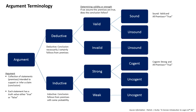An inductive argument, on the other hand, asserts that the truth of the conclusion is supported to some degree of probability by the premises. For example, given that the U.S. military budget is the largest in the world (premise = true), then it is probable that it will remain so for the next ten years (conclusion = true). Arguments that involve predictions are inductive, as the future is uncertain.